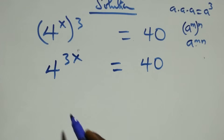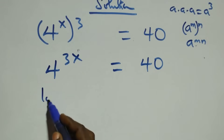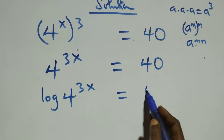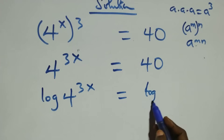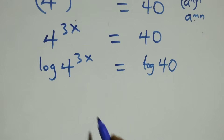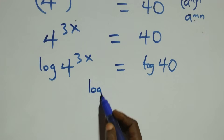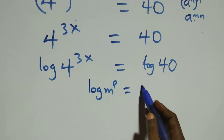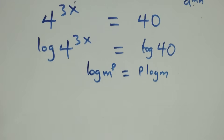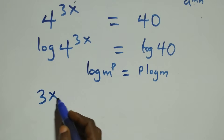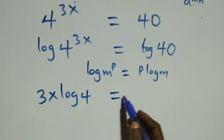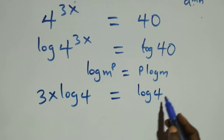The next step: we take the log on both sides. We have log of four raised to power three x equals log of forty. Then we apply the power rule of logarithms: when we have log of m raised to power p, it is the same as p times log m. So what we have here becomes three x times log four equals log forty.